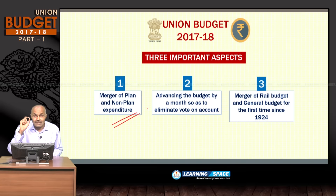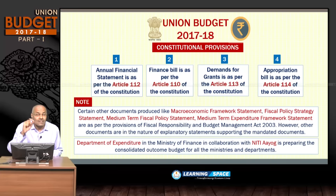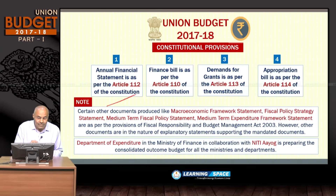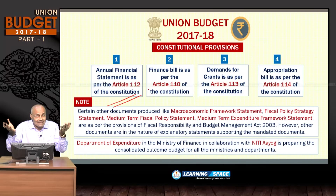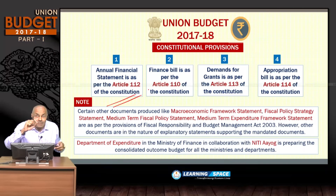The third important point is that the general budget and railway budget were merged for the first time since 1924. Regarding constitutional provisions, the word 'budget' is not mentioned in the Constitution; instead, it refers to the Annual Financial Statement as per Article 112. The Finance Bill, which deals with various taxes, is as per Article 110 of the Constitution.